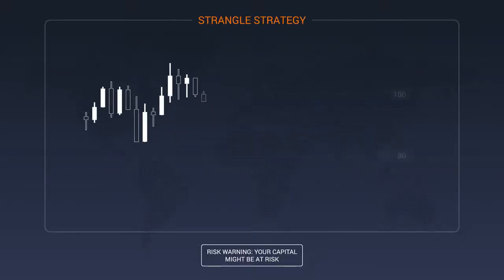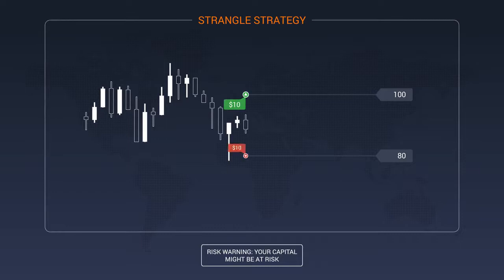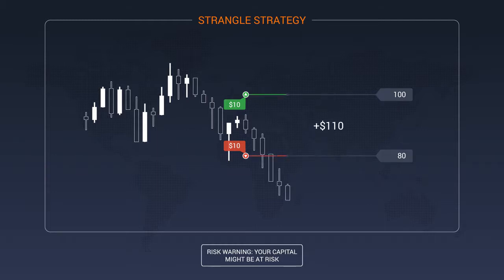The Strangle trading strategy is to buy both call and put options with the same expiration time and different strike prices, with the expectation that the profit from one option will cover costs to buy both options.